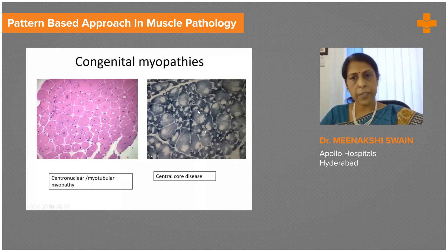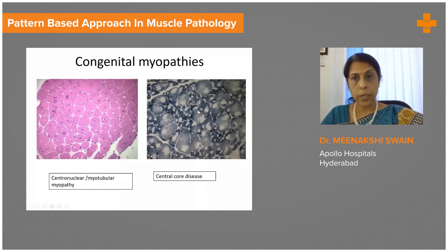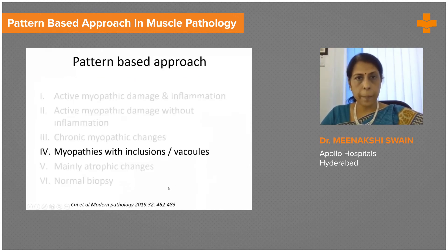On the other hand, in central core disease, the H&E may look completely normal and the diagnosis can only be made on enzyme stains, where you have areas devoid of enzyme activity appearing like cores — hence the name central core disease.